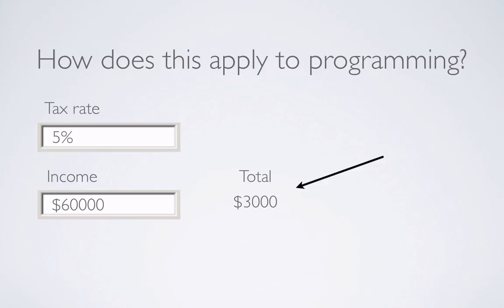So essentially, total will register itself with income and say, 'Give me a message when something changes.' Income will send total a notification — 'this thing changed, do what you want with it.' Then total can say, 'Okay great, what's the current income?' It can look at the tax rate in the top left and calculate the new value. That's a much more efficient use of your programming space. Hopefully that makes sense.